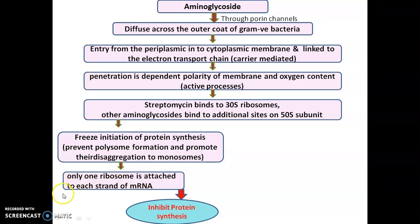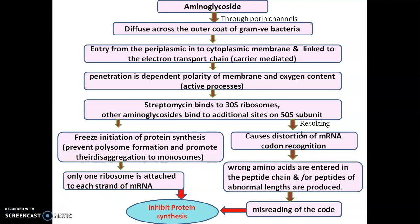Only one ribosome attaches to each strand of mRNA, thereby inhibiting protein synthesis by preventing elongation of the amino acid chain. Additionally, binding with the 30S or 50S ribosomal subunits causes disorientation of mRNA codon recognition — wrong amino acids enter the peptide chain and peptide chains of abnormal length are produced. This faulty codon reading and abnormal amino acid formation ultimately inhibits the protein synthesis process.